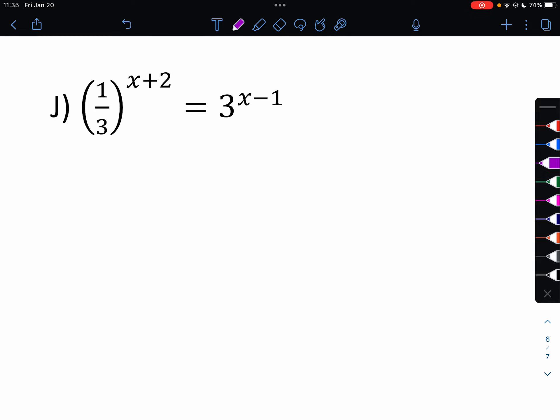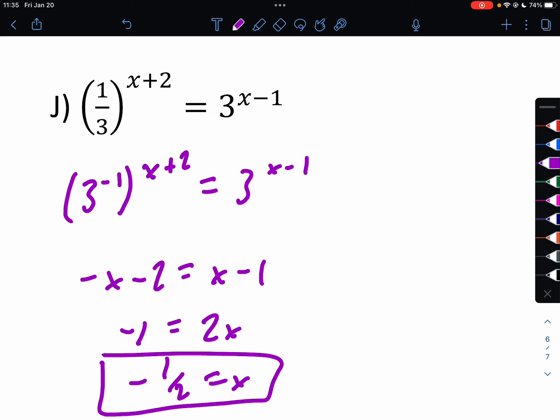Letter j. One-third, remember, we can write that as 3 to the negative 1. So negative 3x plus 2 equals 3x minus 1. So negative x minus 2 equals x minus 1. Add x over here, add 1 over here, divide by 2. Negative 1 half.